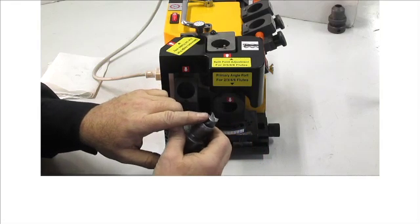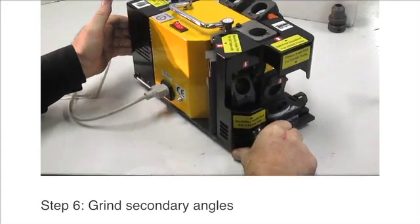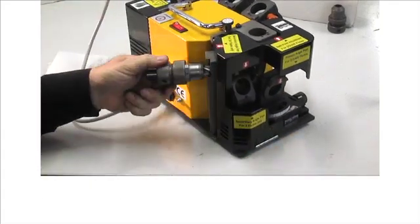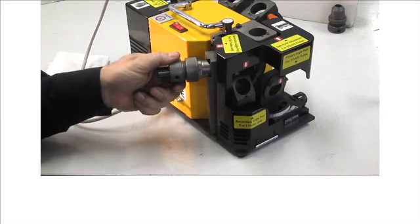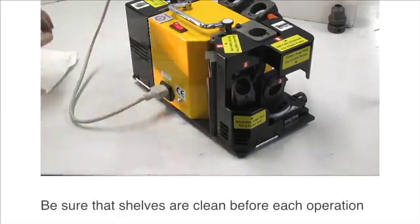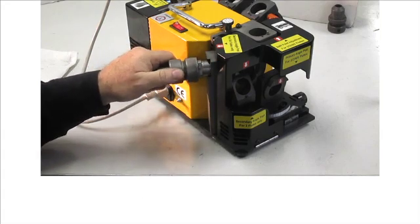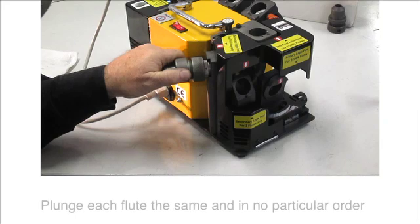Now we're going to do the secondary. Secondary is around back, I'll turn the machine so you can see it easier. You just go around each flute. Oh, before you start this just make sure that your shelves are clean. You create a lot of dust when you're grinding large tools.